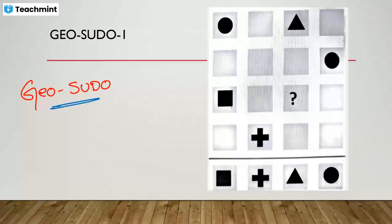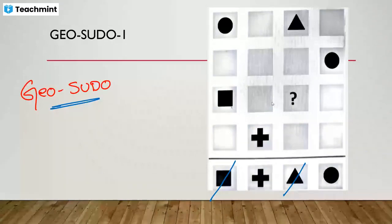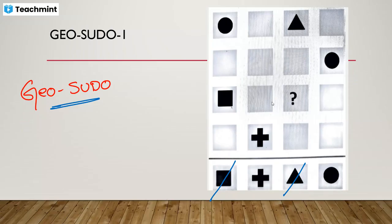Right now column-wise I cannot get a triangle, row-wise I cannot get a square — column-wise no triangle, row-wise no square. So it can be plus or circle. The clue: in general, what you have to do is fill the empty slot which has more elements in its row and column. At the intersection of more elements in row and column, fill that slot. This slot is the one with more elements — it should be a triangle.